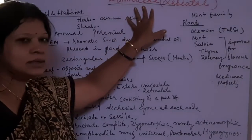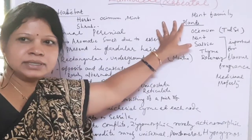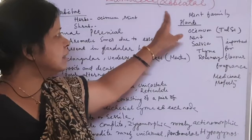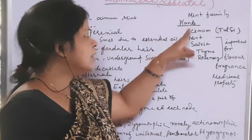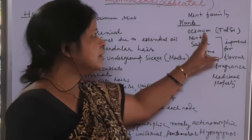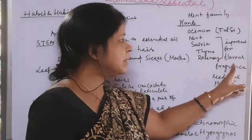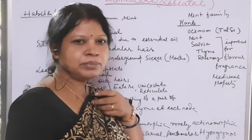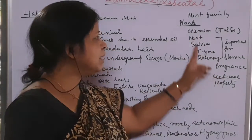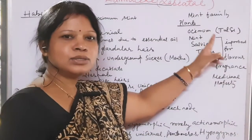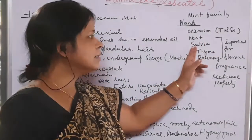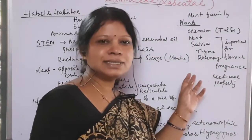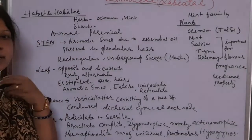Family Lamiaceae, whose old name is Labiatae, is also known as the mint family. All plants belonging to this family are important for their flavor, fragrance, and medicinal properties. Examples include Ocimum (tulsi), mint, salvia, thyme, and rosemary — all are herbs or medicinal herbs.